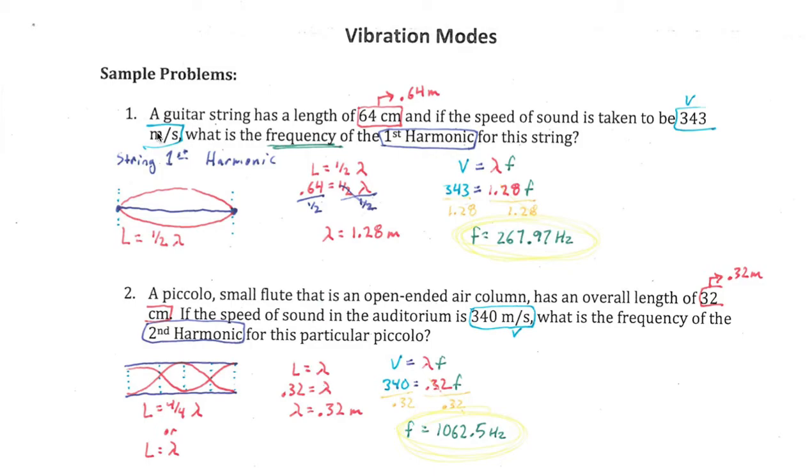...with our distance component over here, or the length component over here. Or we could say let's leave this as centimeters and then convert 343 meters per second into centimeters per second, which is a little bit more strange.